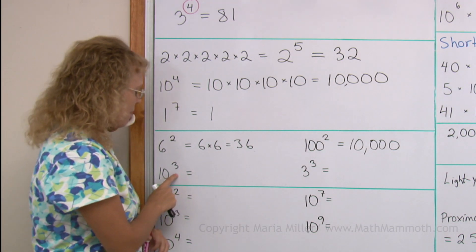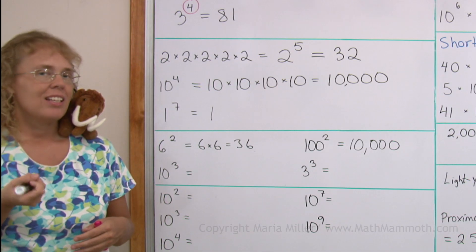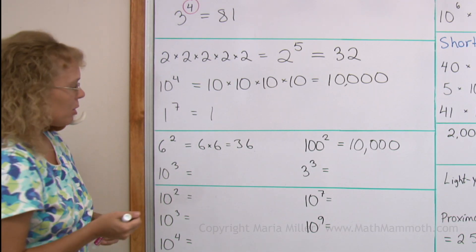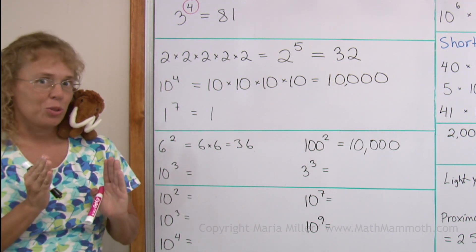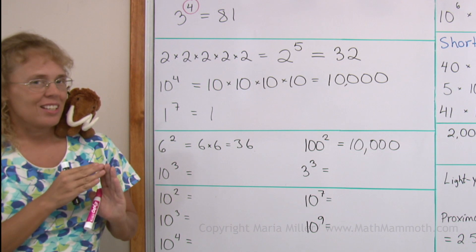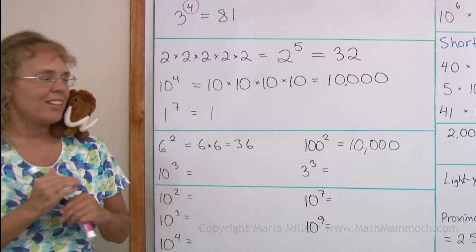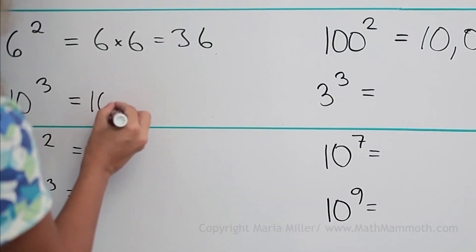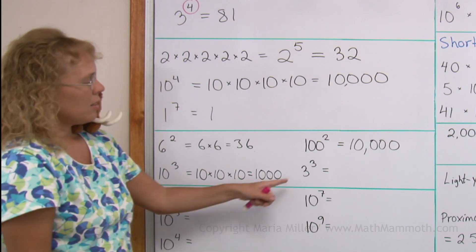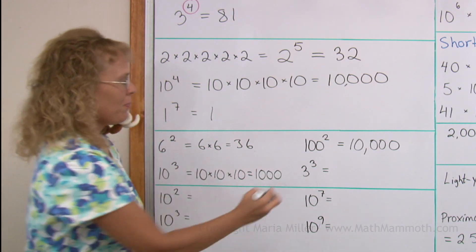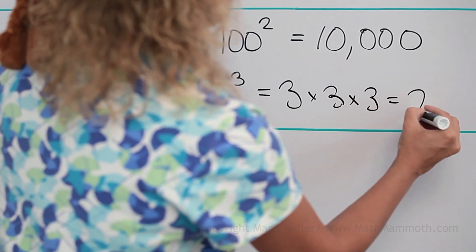This one also has a special name: 10 to the third power, or 10 cubed. It comes from the fact that to calculate the volume of a cube, we multiply its side by itself three times — length times width times height. So 10 times 10 times 10 is 1,000. And 3 cubed is 3 times 3 times 3, which equals 27.